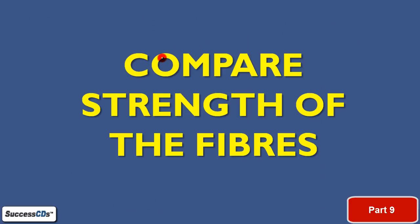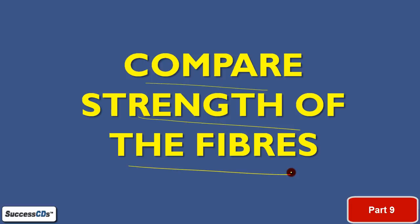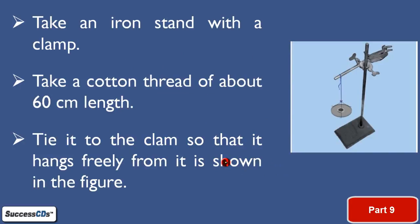In the first activity, we are going to compare the strength of fibers — strength of the fiber means how strong the fiber is. Kaun sa fiber ki strength kam hai aur kaun sa fiber bahut strong hai — so this we are going to compare in this activity. For this, what we need to take is: take an iron stand with a clamp.